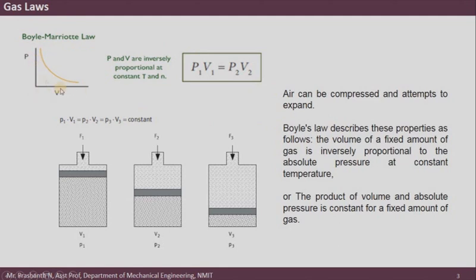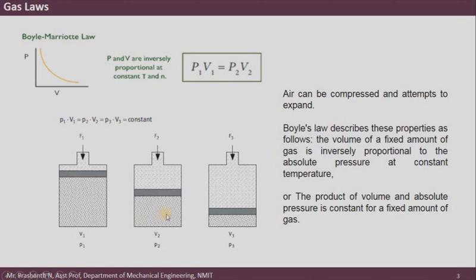Looking at a graph with pressure on the y-axis and volume on the x-axis, P and V are inversely proportional: when pressure is high, volume is low, and vice versa. In the default scenario, a fixed volume of gas has volume V1 and pressure P1. When I apply force and increase it, volume decreases and pressure increases — P2 is greater than P1.